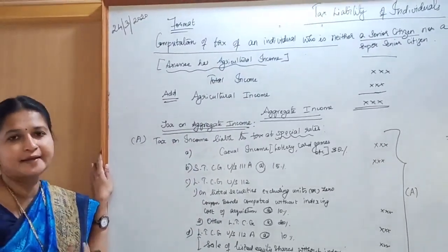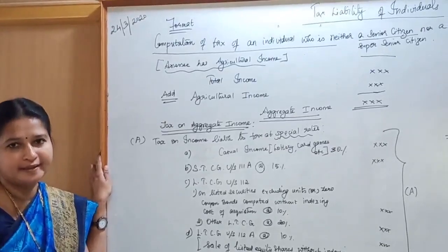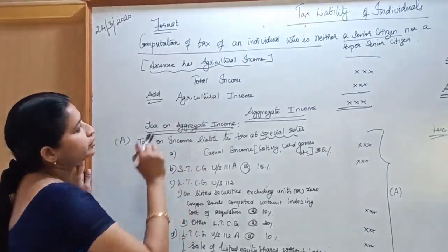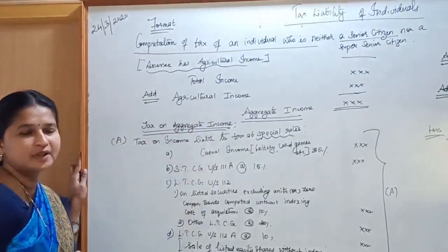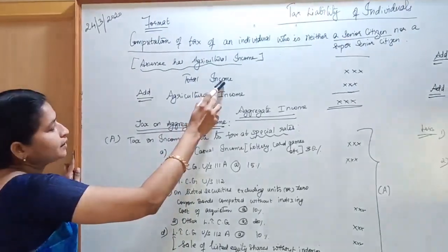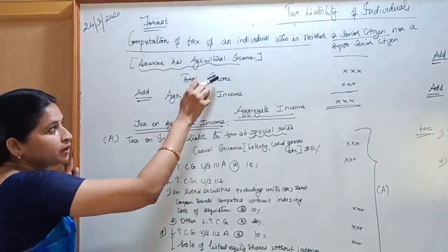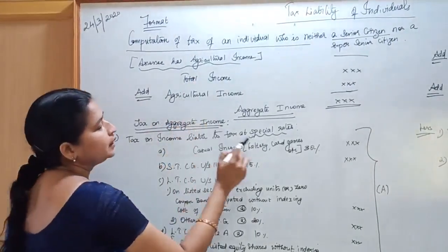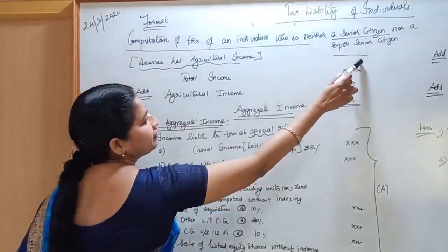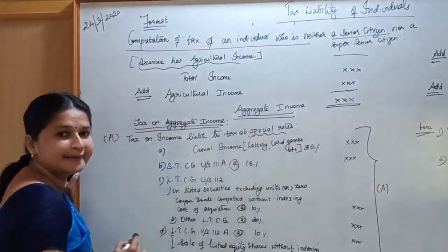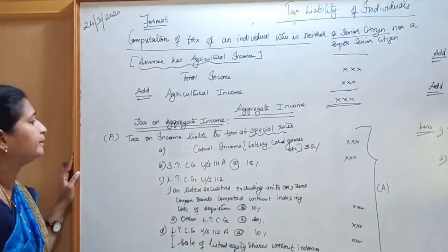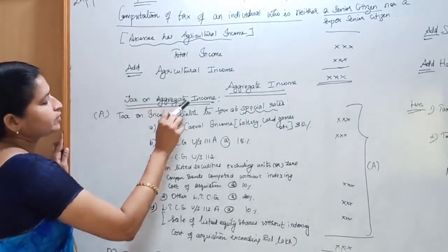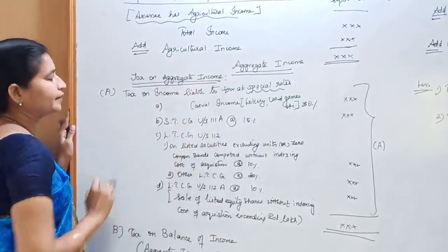For computation of tax of an individual who is neither a senior citizen nor a super senior citizen, and who also has agricultural income: first, calculate the total income of the assessee. Then, to the total income of the assessee add agricultural income. The total of these is called the aggregate income. Next, calculate tax on the aggregate income.